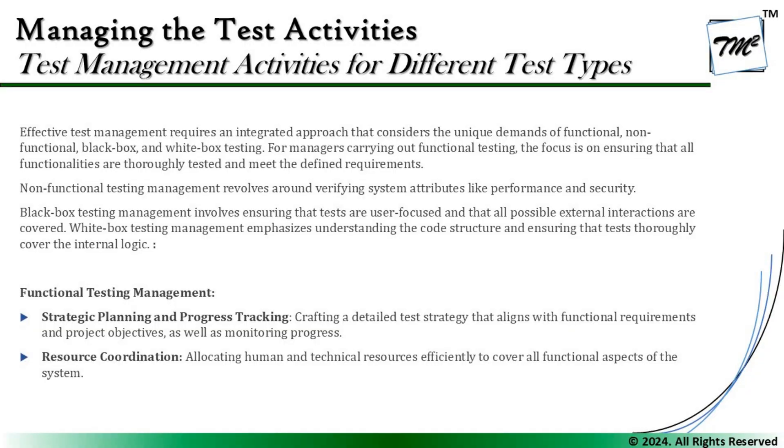The very first one is functional testing management. Here we look forward to strategic planning and progress tracking — crafting a detailed test strategy that aligns with functional requirements and project objectives, and monitoring progress. The second important thing is resource coordination: allocating human and technical resources efficiently to cover all functional aspects of the system. The functional levels include unit, integration, system, and acceptance testing. Acceptance is typically done by the business, but some non-functional aspects may also come into our context.